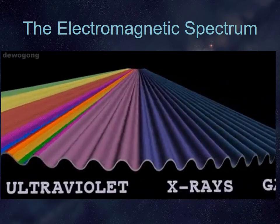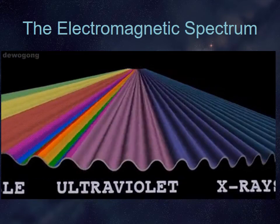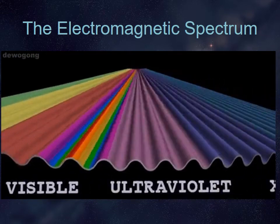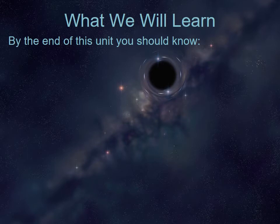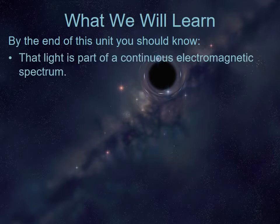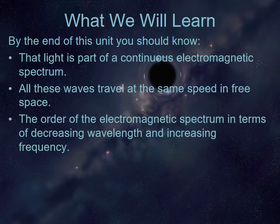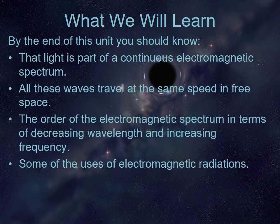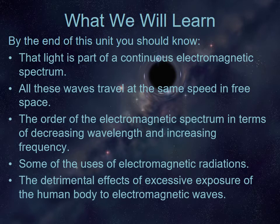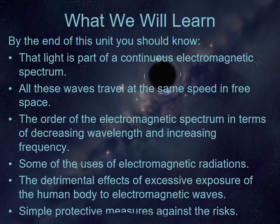Welcome to the last unit in the topic of waves: the electromagnetic spectrum. By the end of this unit, you should know that light is part of a continuous electromagnetic spectrum. All these waves travel at the same speed in free space, and the order of the electromagnetic spectrum is in terms of decreasing wavelength and increasing frequency, some of the uses of the electromagnetic radiations, the detrimental effects of excessive exposure of the human body to electromagnetic waves, and simple protective measures against those risks.